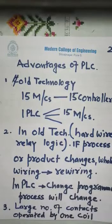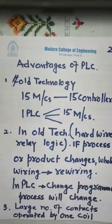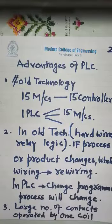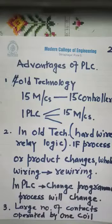PLC is one advanced electronic circuit. Compared to old technology, if I wanted to control 15 machines I would need 15 controllers, but one PLC can control many machines at a time. For example, in a power plant spread over a few acres, many subsystems work simultaneously — cooling towers, coal handling systems, and ash handling systems at different places — all controlled by a single PLC, even from a distant control room using sensors and transducers.